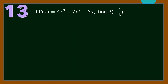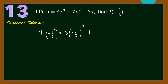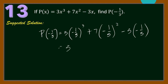Number 13. If P(x) = 3x³ + 7x² − 3x, find P(−1/3). For our solution, let us substitute x = −1/3. Then we have P(−1/3) = 3(−1/3)³ + 7(−1/3)² − 3(−1/3). So we have 3 times (−1/27) plus 7/9, since (−1/3)² = 1/9, plus 1, since −3 times (−1/3) = 1.